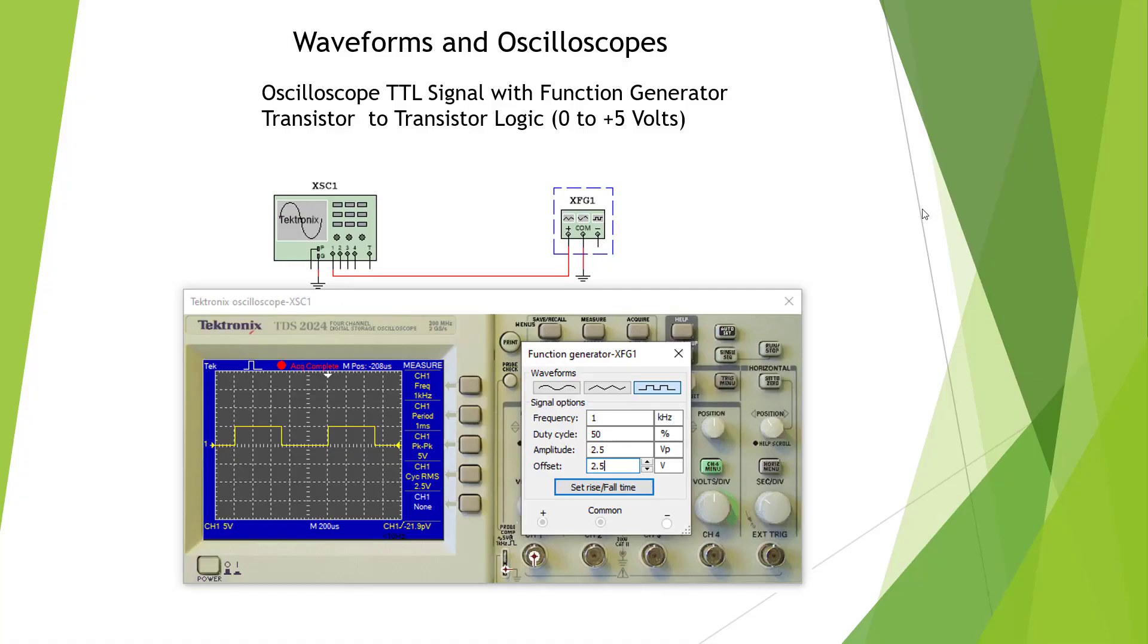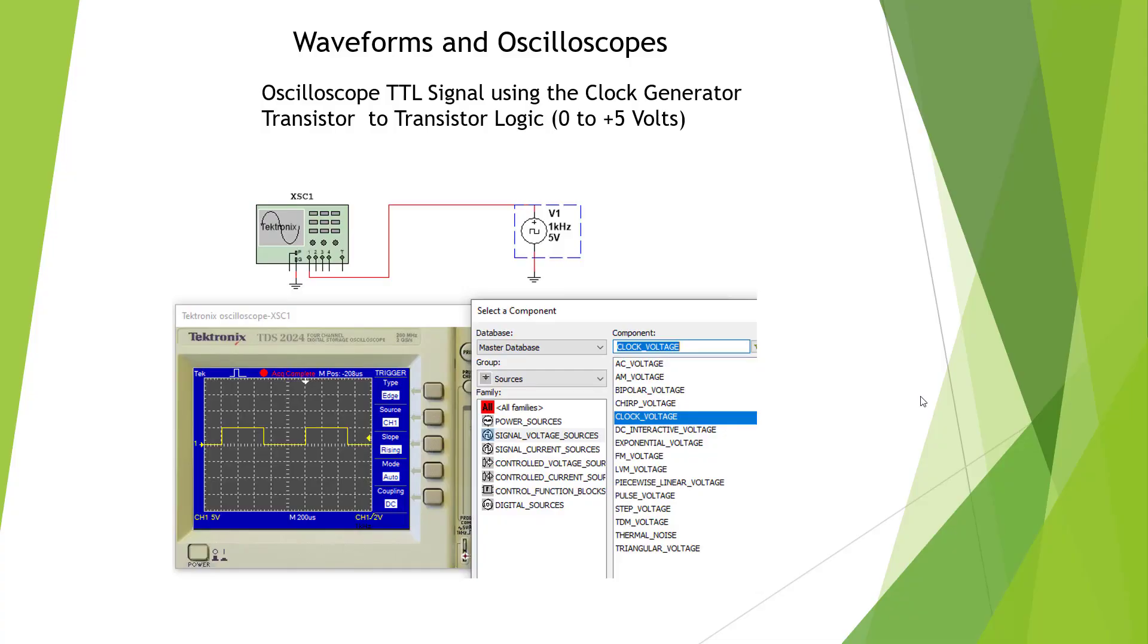Here's a setup that we could use in order to do TTL signals. Here's our Tektronix scope. We click on it. We're going to get one that looks just like the one that we have in lab. And here's our function generator. But in order to do TTL, we have to set amplitude to 2.5 and offset at 2.5 volts DC. That's in order for us to get a TTL wave. Here we see TTL. It's 0 to 5 volts. There are easier ways to do this. And if we wanted different signals, we would use a different function generator. I found this to be the best way in order to create a TTL signal.